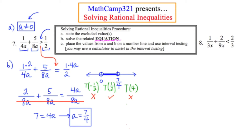Using interval notation, the winning region for this inequality is the values between 0 and 7 fourths. That's the answer to problem number seven. We have one more sample problem to go, and it should go quicker now that we've been through the process.